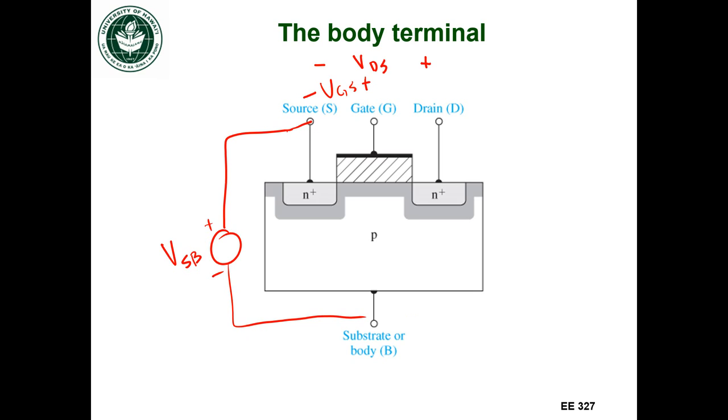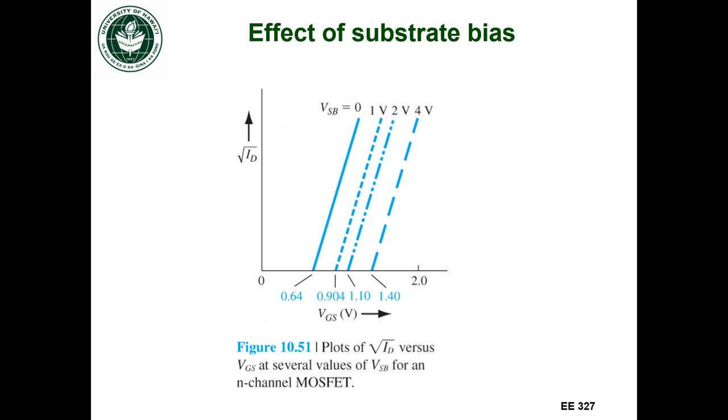So what happens when we do this? So this is the effect of adding a bias between the source and the substrate, or the source and the body terminal. Plotted on the y-axis is not the drain current directly, but the square root of the drain current, and the x-axis is VGS. These different curves correspond to different source to body voltages.